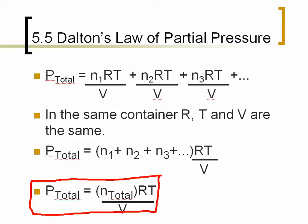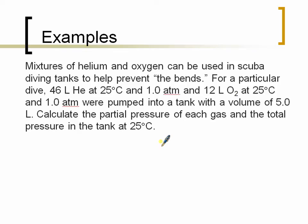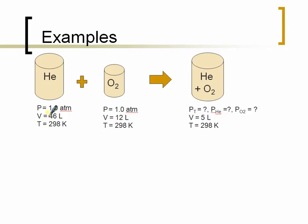So let's do this by example. A mixture of helium and oxygen can be used in scuba diving tanks to prevent the bends. For a particular dive, 46 liters of helium at 25 degrees Celsius and 1 atm, and 12 liters of O2 at 25 degrees Celsius and 1 atm were pumped into a tank with a volume of 5 liters. Calculate the partial pressure of each gas and the total pressure in the tank. So this is a two-part question. To kind of break this down a little bit, I sketched out a diagram. We have helium with a very different volume from the oxygen. We're going to actually combine those two gases into a container that's 5 liters.